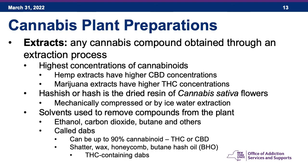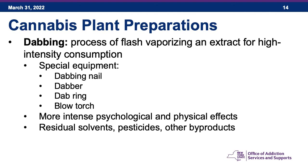Common slang names for THC-containing DABs include shatter, wax, honeycomb, and butane hash oil (BHO). Dabbing is the process of flash-vaporizing an extract for high-intensity consumption. The equipment includes a dabbing nail (a quartz, titanium, or ceramic surface heated to vaporize a DAB), a dabber (a metal or glass instrument to apply the DAB), a DAB rig (a special water pipe with a fitting for the nail), and specialized blow torches to heat the nail. You get much more intense psychological and physical effects this way.